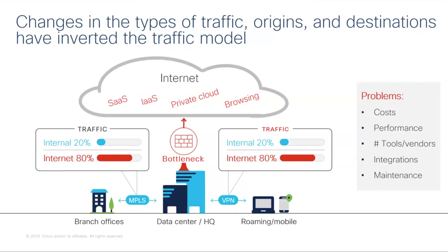This environment has changed, and it's caused a whole bunch of problems. You see on the right: costs, performance, the number of tools, the integration and maintenance that you have to do — all of these have become issues within organizations. The MPLS and VPN communication setups you see in the older typical environment are expensive, and the amount of traffic has gone up and most of it is going out to the internet. The idea of bringing it via an indirect path to get it to a data center — when that's not really its destination — is indirect and inefficient. It creates a bottleneck as you try to funnel that large percentage of traffic through a single choke point with multiple security appliances or devices at a data center or headquarters location.